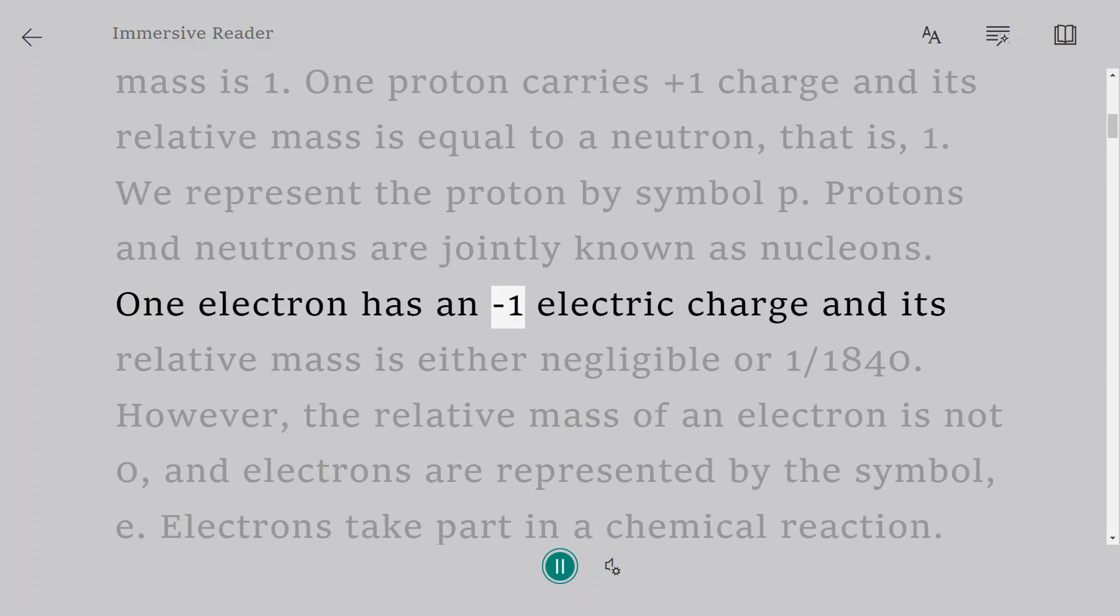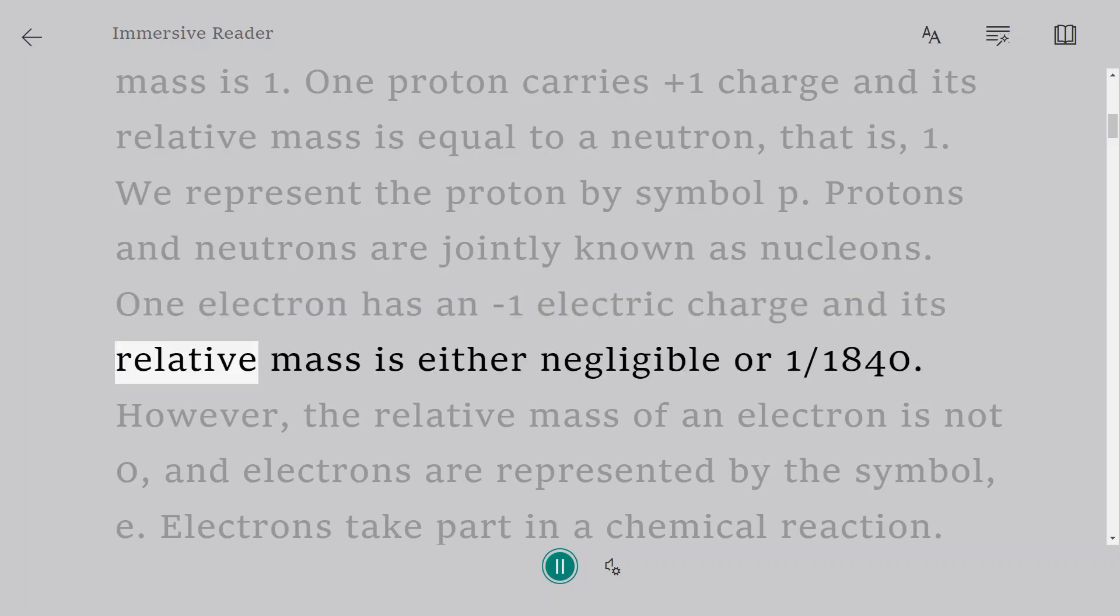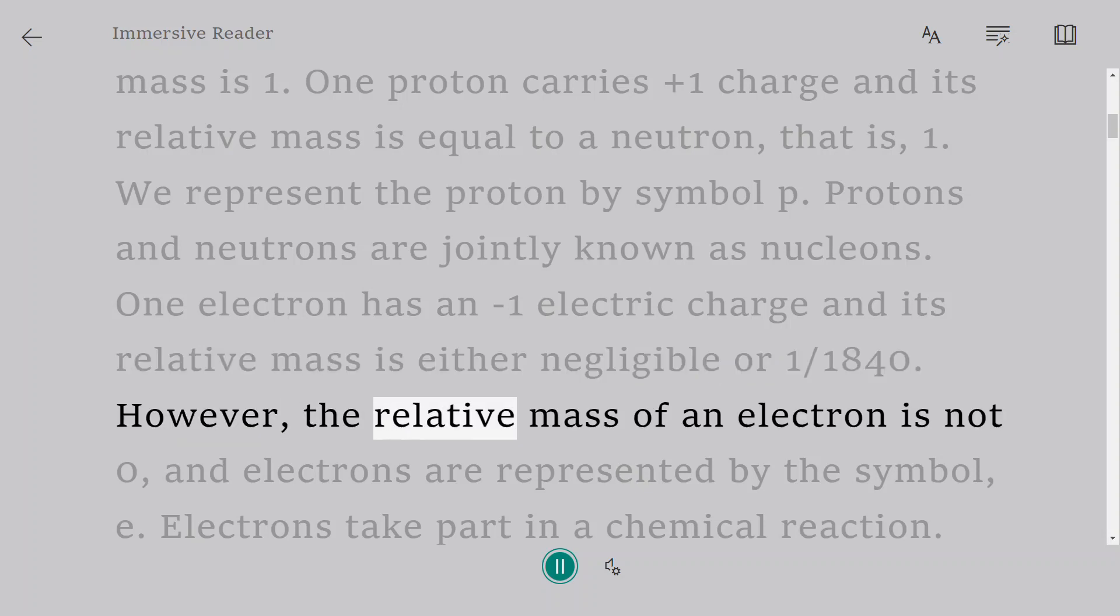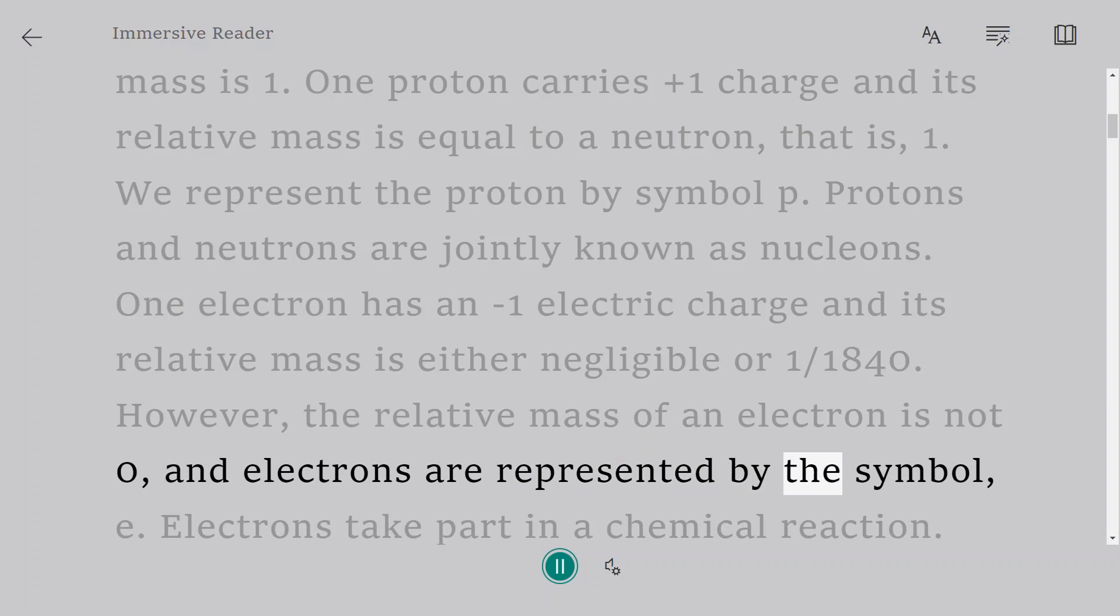One electron has a minus one electric charge and its relative mass is either negligible or 1/1840. However, the relative mass of an electron is not zero, and electrons are represented by the symbol E.